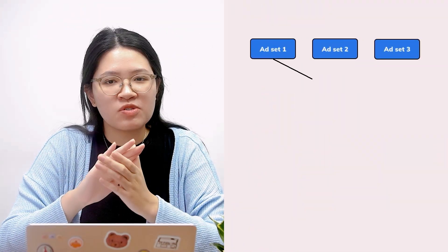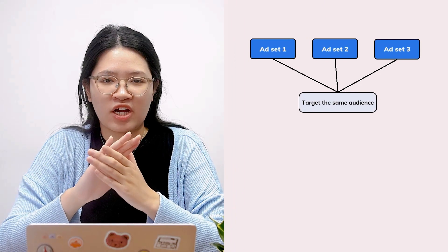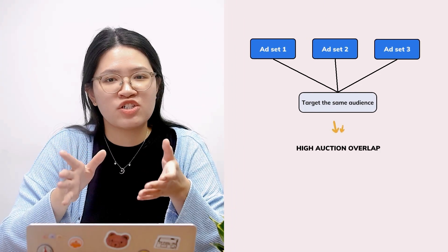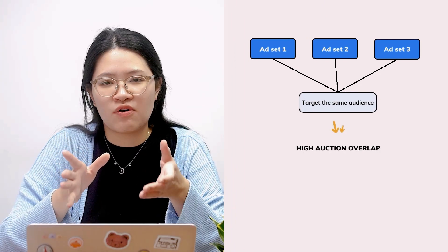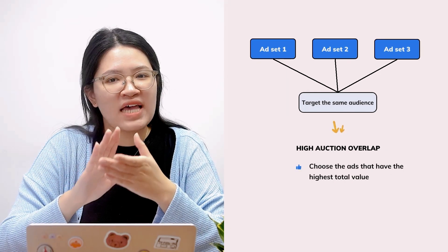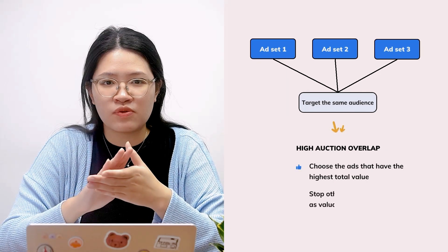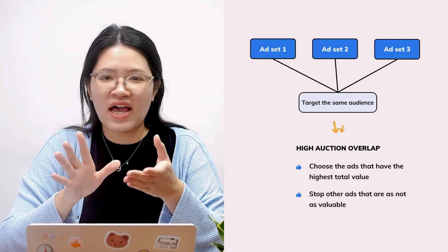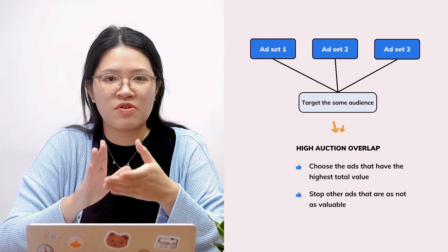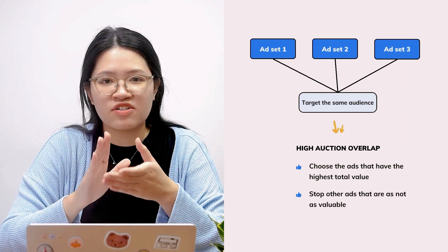High auction overlap means the opposite problem. If you have multiple ad sets with the same audience targeting setup, you will end up competing against yourself. To prevent this, Facebook will choose the ads with the highest total value to win the auction, and other less valuable ads will be paused to stop you from bidding against yourself.